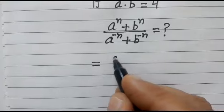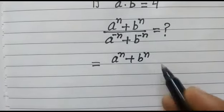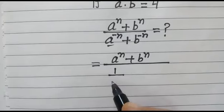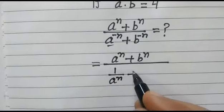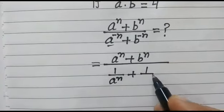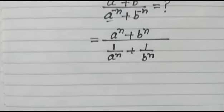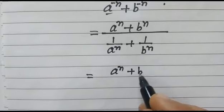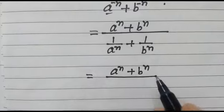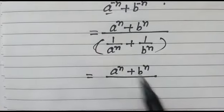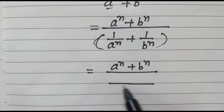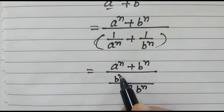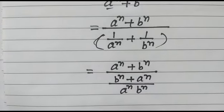A to the power n plus b to the power n will remain as it is, over a to the power minus n — we can write 1 over a to the power n — plus b to the power minus n, which can be written as 1 over b to the power n. In the next step, a to the power n plus b to the power n over — we will solve this — LCM will be taken as a to the power n, b to the power n. Here b to the power n plus a to the power n.